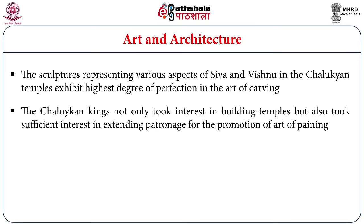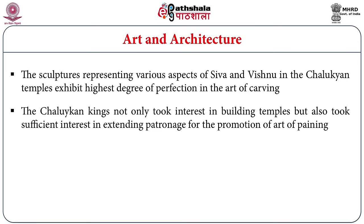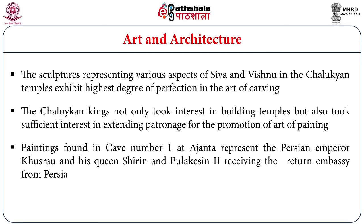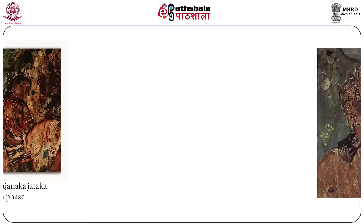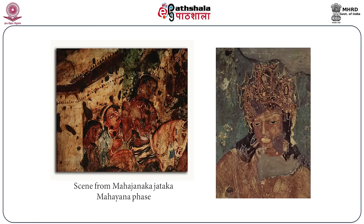The Chalukyan kings not only took interest in building temples but also extended patronage for the promotion of the art of painting. Paintings found in cave number 1 at Ajanta represent the Persian emperor Khusru and his queen Shirin, and Pulakesi II receiving a written embassy from Persia. Thus the Chalukyas of Badami played an important role in the political history of South India in particular and India in general, with substantial contributions in the fields of religion, art and architecture.